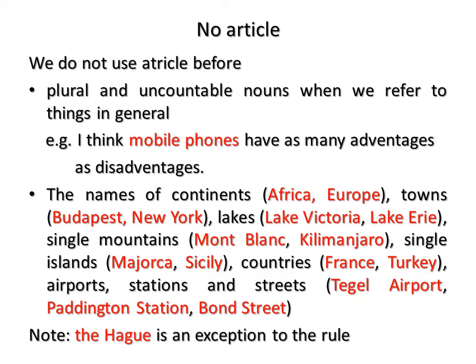Now let's look at some examples where no article is needed. We don't use an article before plural and uncountable nouns when we refer to things in general. For example: 'I think mobile phones have as many advantages as disadvantages.' We use no article before the names of continents, towns, lakes, single mountains and islands, countries, airports, stations and streets. But there are some exceptions to this rule — for example, The Hague.